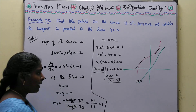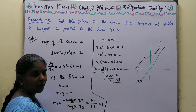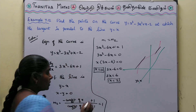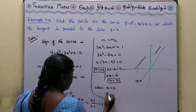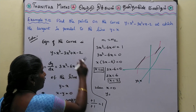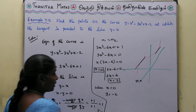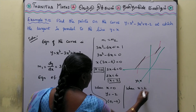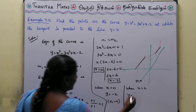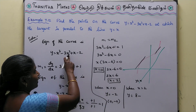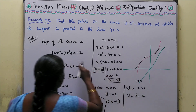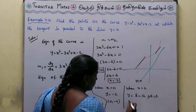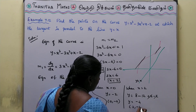When x = 0: substituting into the curve, y = 0 - 0 + 0 - 2 = -2. When x = 2: y = 2³ - 3(2²) + 2 - 2 = 8 - 12 + 2 - 2. The plus 2 and minus 2 cancel, so 8 - 12 = -4. Therefore y = -4.